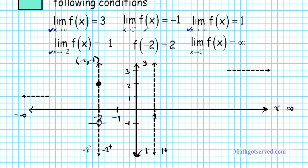Now let's look at what happens around positive 1. When x approaches 1 from the left, the function tends towards infinity, so the graph goes really close to the vertical asymptote and shoots up forever. From the right side, the function approaches the point 1, negative 1, so I place an open circle there and draw the function approaching negative 1 from the right.